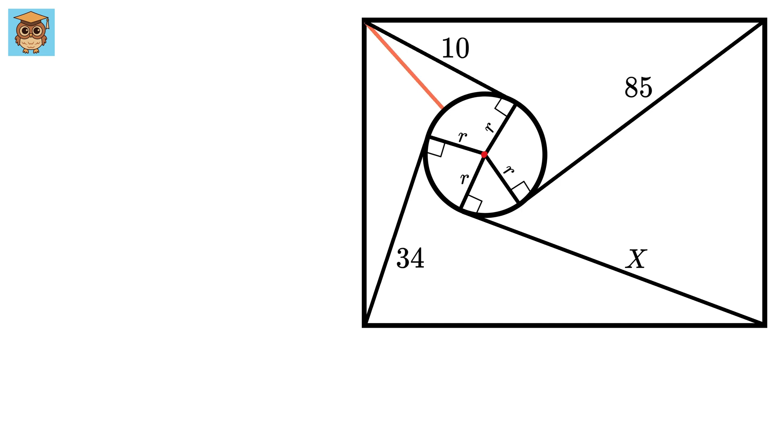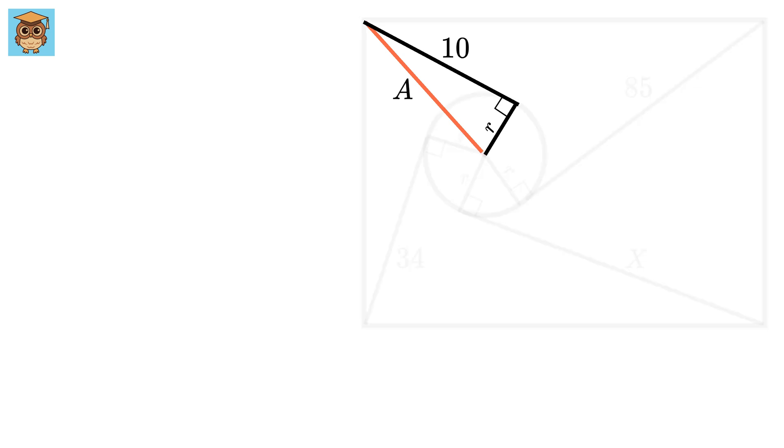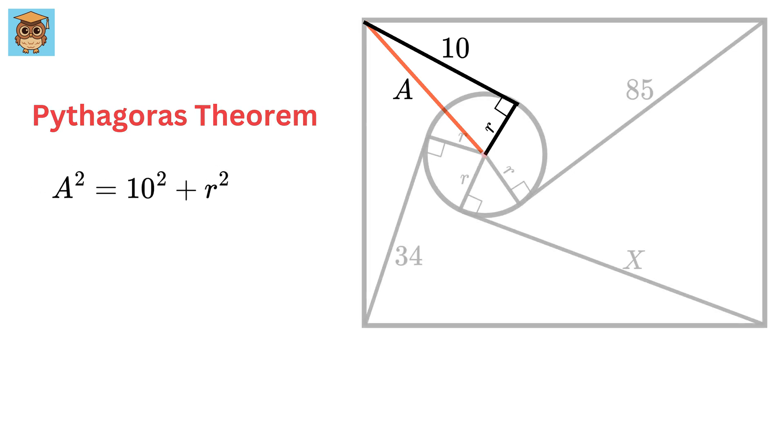Now, draw this line, which connects this vertex of the rectangle, to the center of the circle. Let us label it as a. This will be a right triangle. So, we will use Pythagorean theorem to find its value. We get a square equals ten square plus r square.